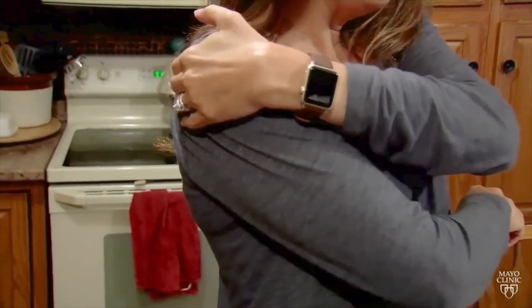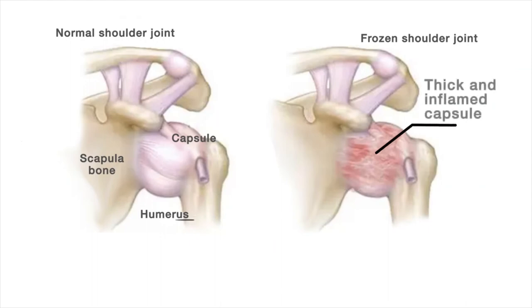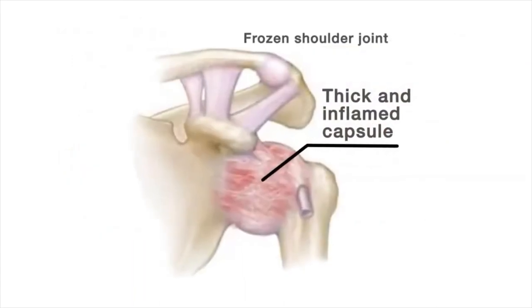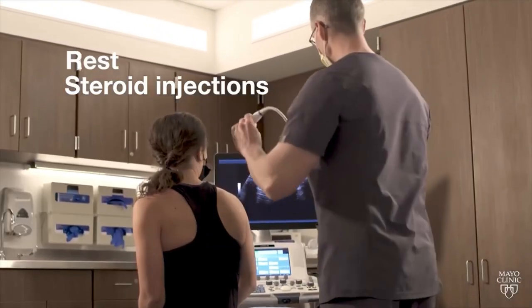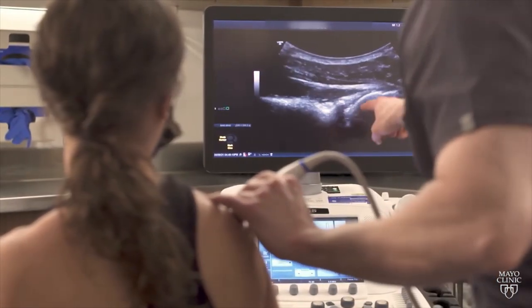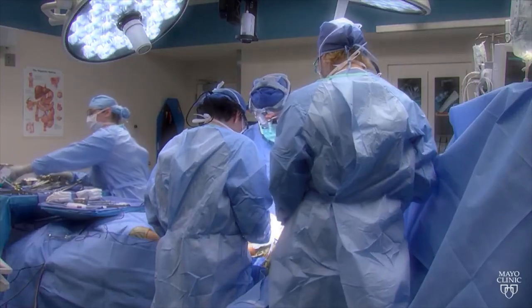Frozen shoulder (adhesive capsulitis) is when the shoulder gets tight and movement is severely restricted. It occurs when the shoulder joint lining becomes inflamed — possibly from a small injury — thickens, and forms scar tissue. It exists in three stages: the inflammatory (painful) stage, where rest and steroid injections may help; the frozen stage, where the shoulder is less painful but stiffening worsens and physical therapy is effective; and the thawing stage, where pain lessens and range of motion slowly returns. This process can take over a year. Surgery may be an option if it doesn't resolve in 6-12 months.